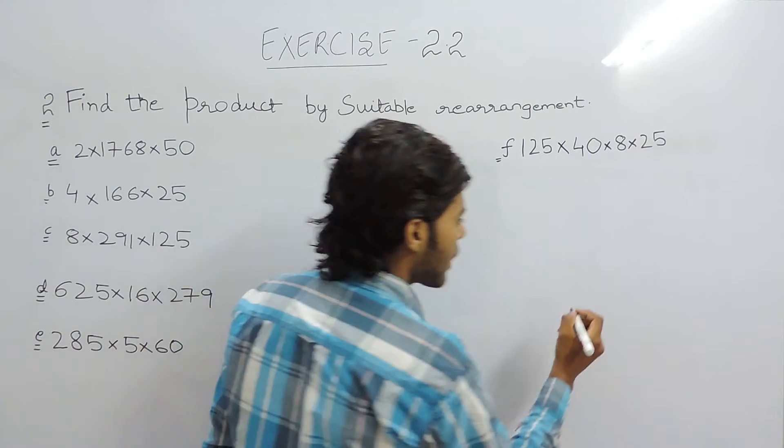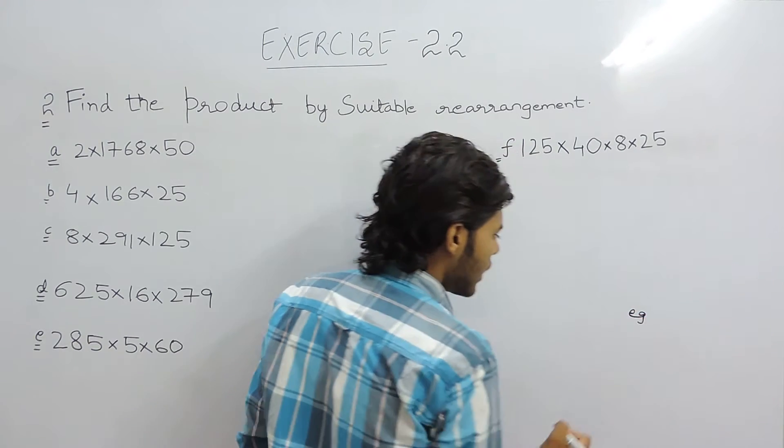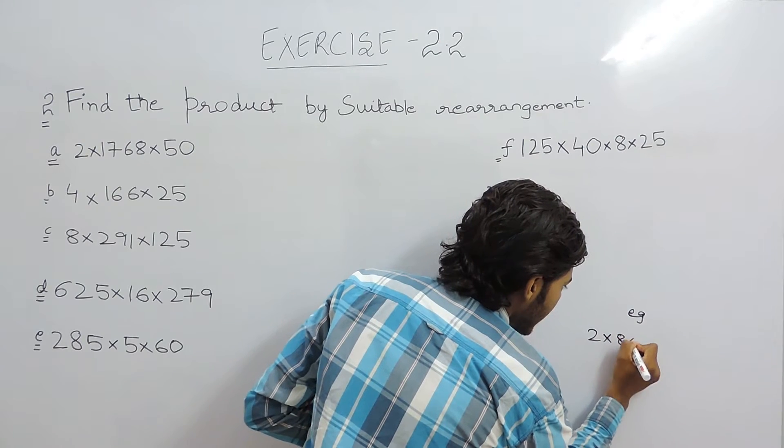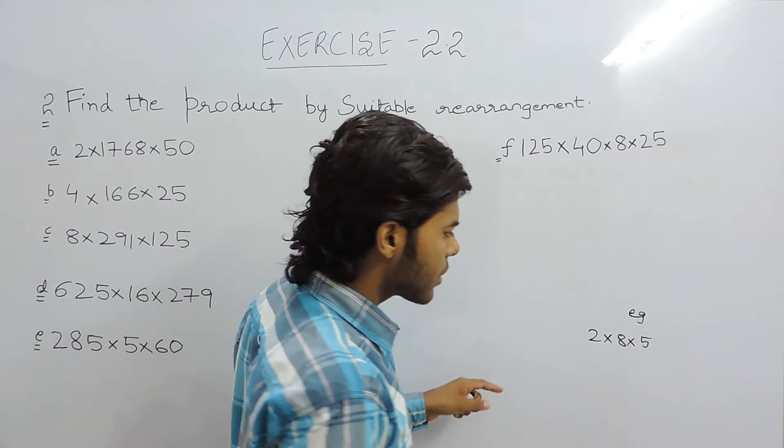Now let me give you an example how to solve these type of questions. Example, there is a number 2 into 8 into 5. Let's take these to be small numbers.